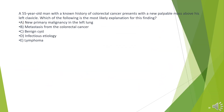A 55-year-old man with a known history of colorectal cancer presents with a new palpable mass above his left clavicle. Which of the following is the most likely explanation for this finding? A. New primary malignancy in the left lung. B. Metastasis from the colorectal cancer. C. Benign cyst. D. Infectious etiology. E. Lymphoma.